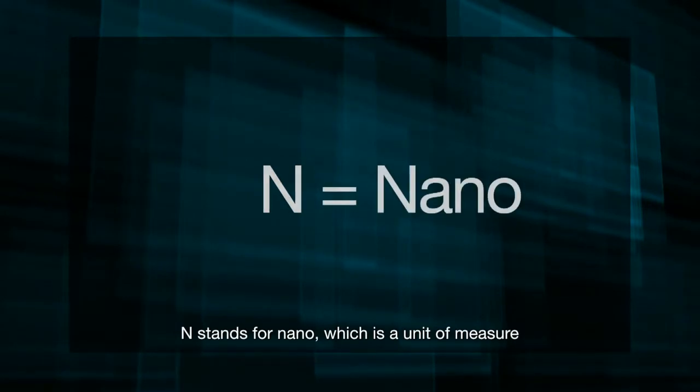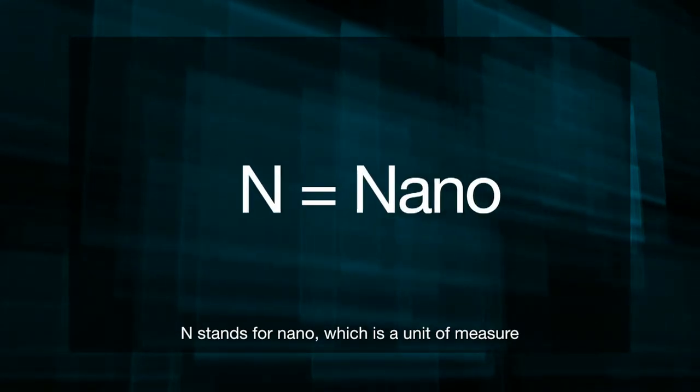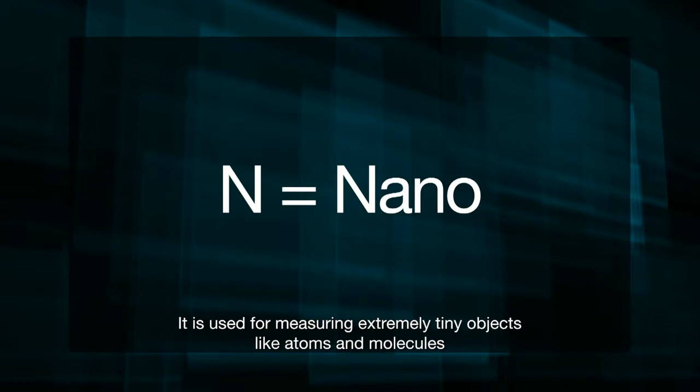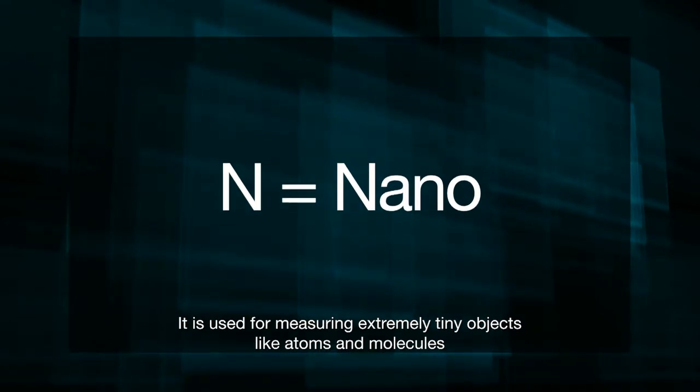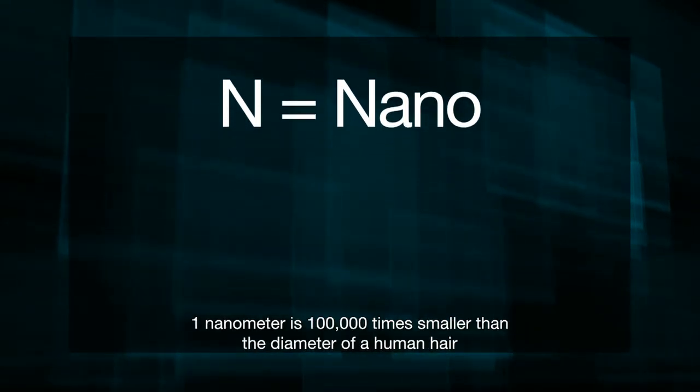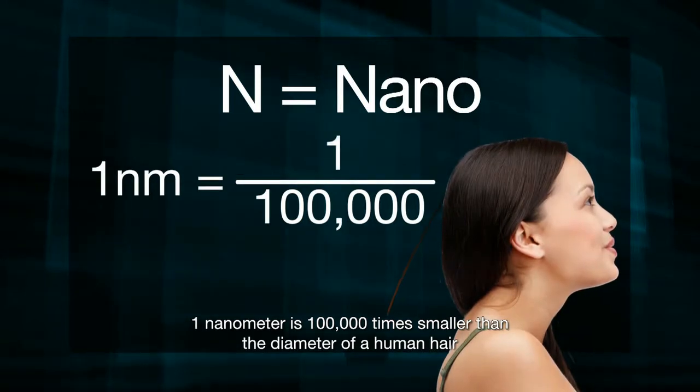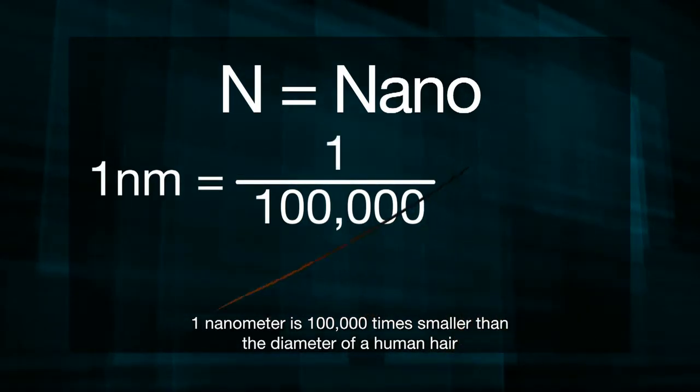N stands for nano, which is a unit of measure used for measuring extremely tiny objects like atoms and molecules. One nanometer is 100,000 times smaller than the diameter of a human hair.